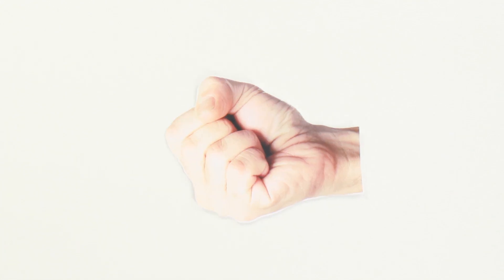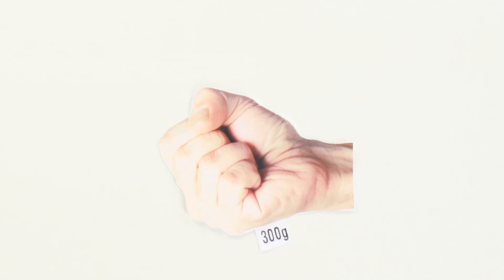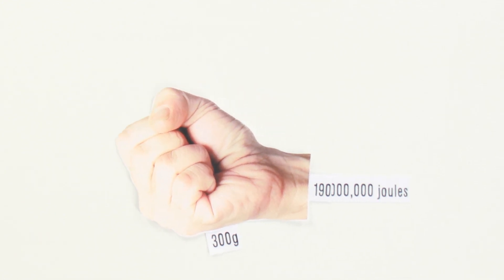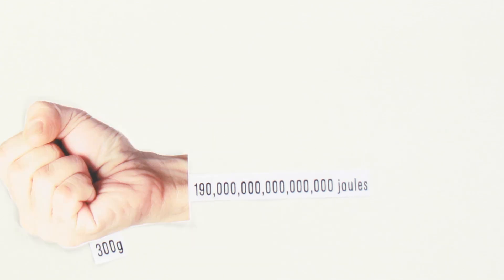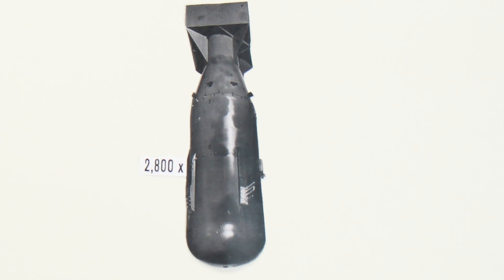So you are unfortunately about to fight the Man of Steel, who in this case will not be restraining himself. If his fist has an average mass of 300 grams and it's moving at 99% the speed of light, it would have a total energy of about 190 quadrillion joules, which is equivalent to 45 megatons of TNT or over 2,800 times more powerful than the nuclear bomb dropped on Hiroshima.